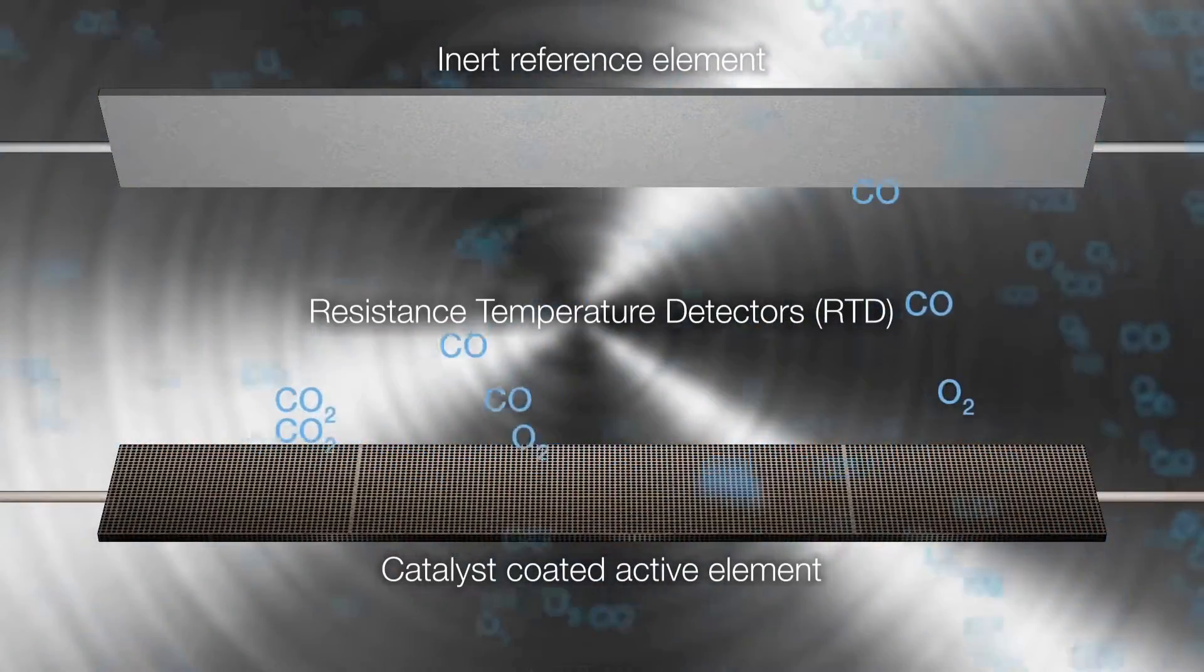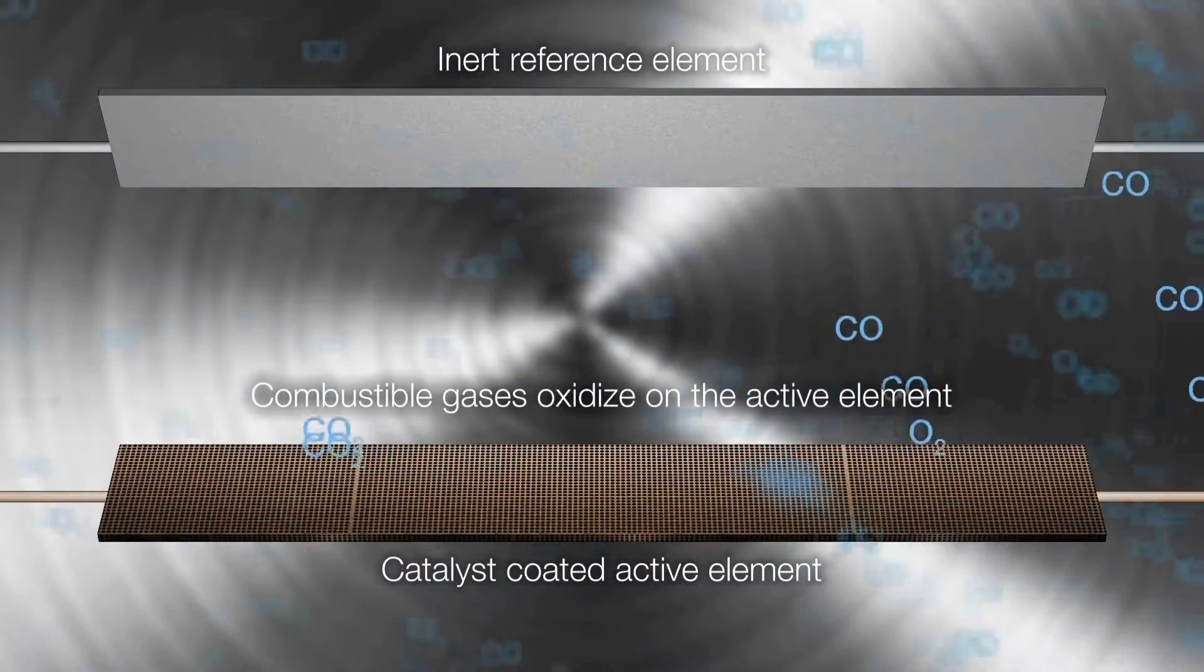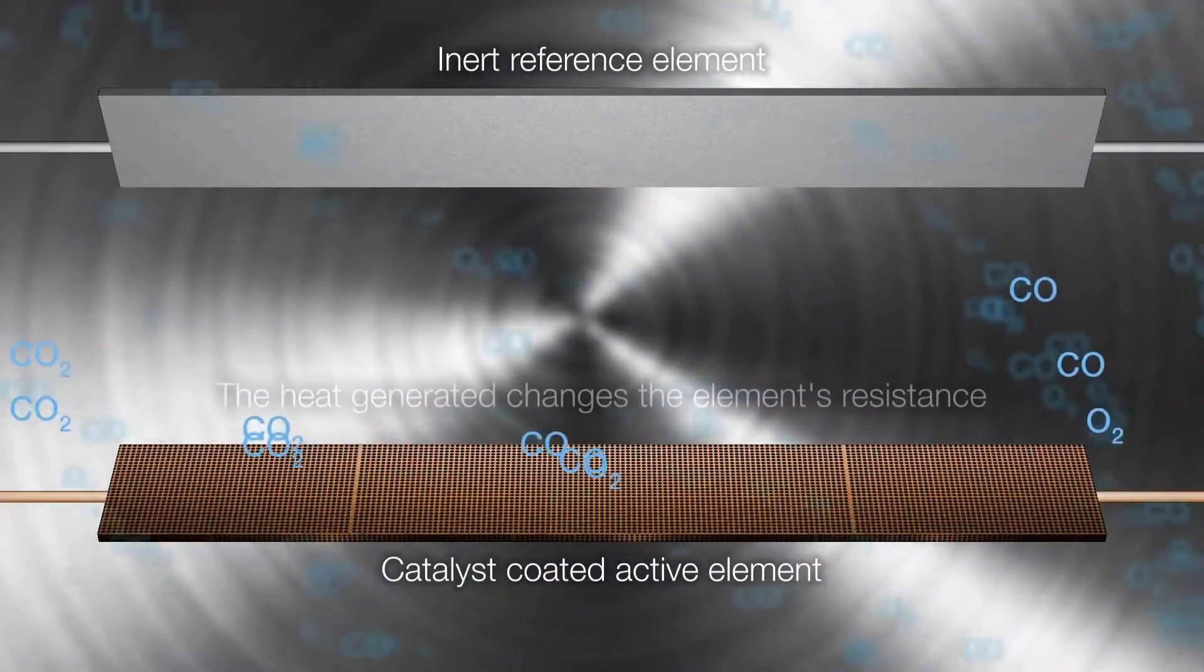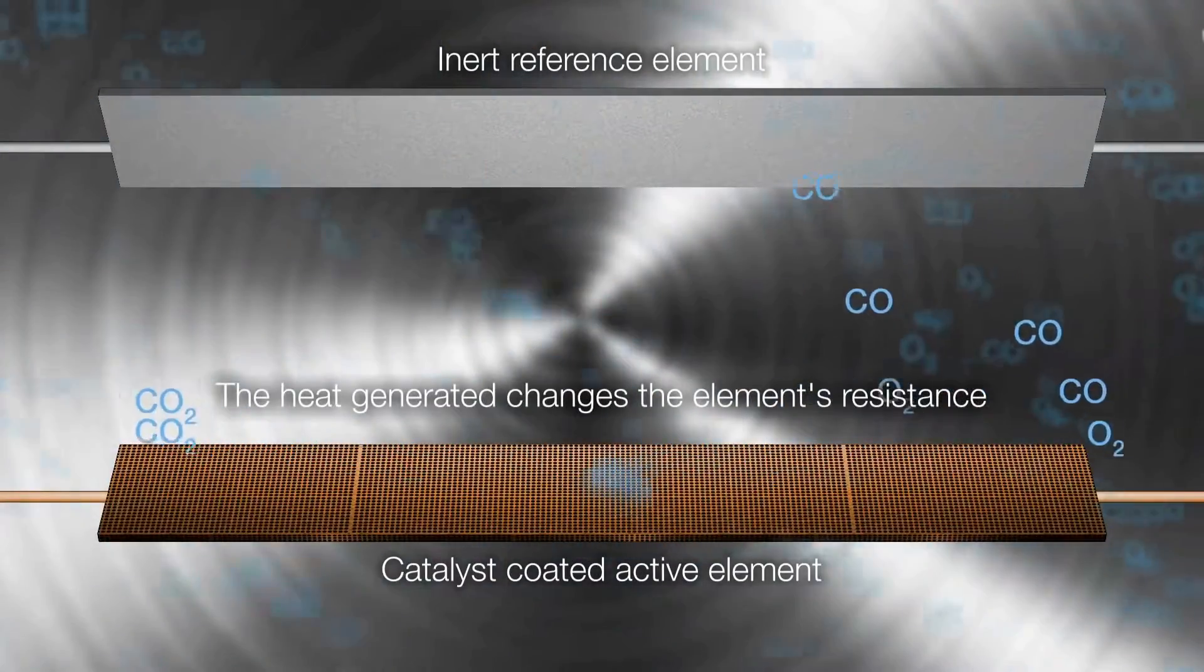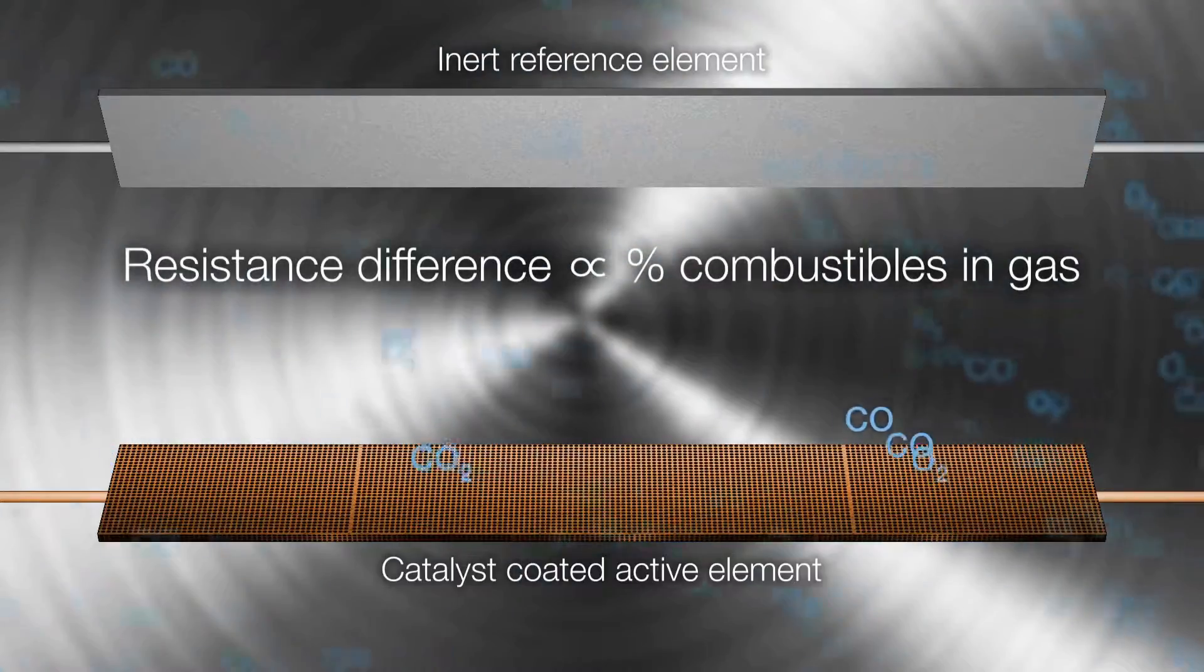As the sample gases flow by the sensor, the combustible gases oxidize on the surface of the active element. The heat generated by the oxidation causes a temperature difference between the active and the reference elements. This temperature difference produces a resistance relationship between the two elements that is directly proportional to the concentration of combustibles in the sample gases.